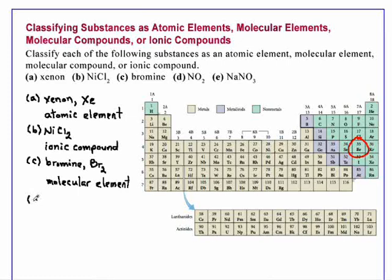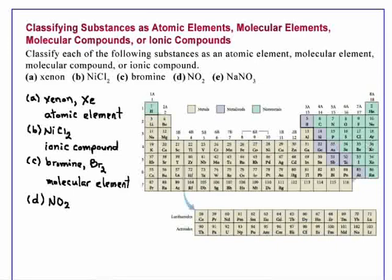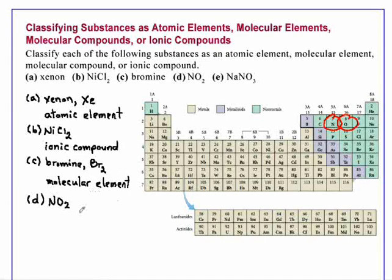Example D is NO2. Locating the two elements that make up this substance, nitrogen and oxygen, the fact that we have two different elements makes this a compound. And both elements are located in the nonmetallic portion of the periodic table. So we will make a prediction that this is a molecular compound.